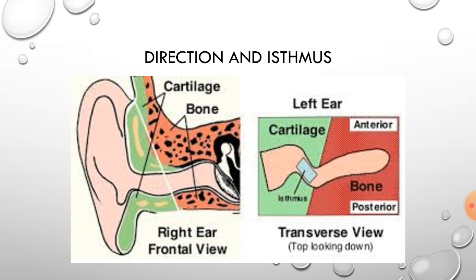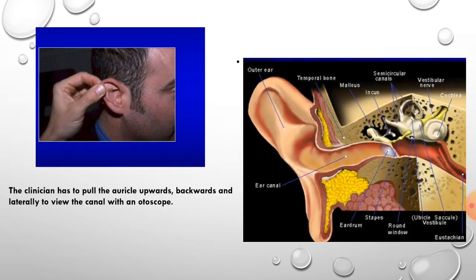Regarding the direction of the external auditory meatus: the cartilaginous part is directed upwards, backwards, and inwards, whereas the bony part is directed downwards, forwards, and inwards. Thus there is an angle between the two parts, and during otoscopy this tortuosity must be corrected to get a good view of the tympanic membrane by holding the pinna from its postero-superior margin and pulling it upwards, backwards, and outwards in adults. In children this technique is different.